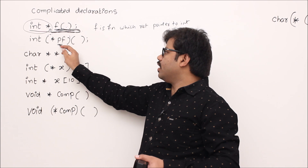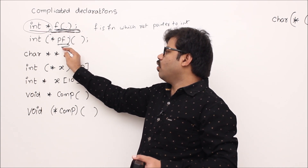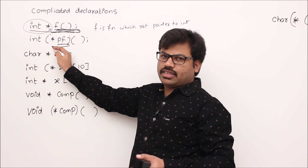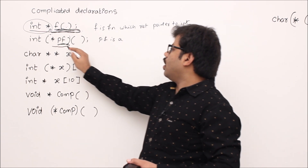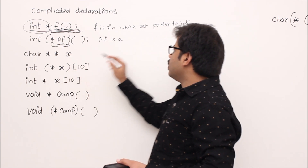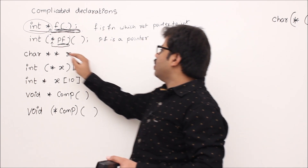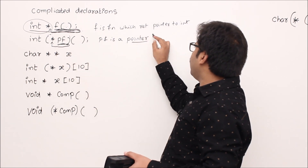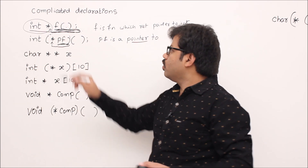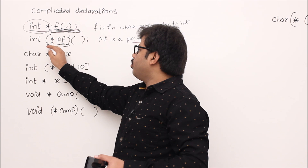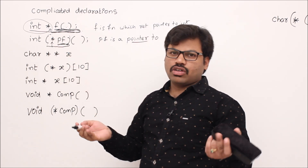'pf is a variable.' Now, because of priority, go left. I'm seeing a star symbol — star means pointer. So 'pf is a pointer to' — generally pointer is always 'pointer to' something. Now we've seen the left parenthesis, meaning priority is resolved.